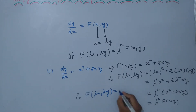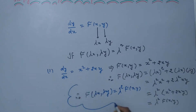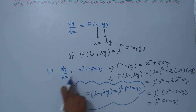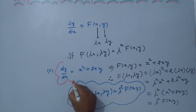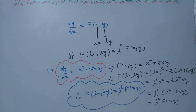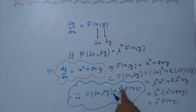This is the original f(x, y), so we write f(lambda x, lambda y) equals lambda squared times f(x, y). The conclusion is that the given differential equation dy/dx equals x squared plus 2xy is a homogeneous differential equation of degree 2.